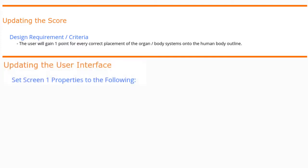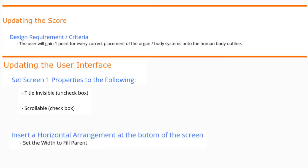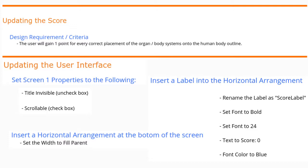In order to do this, we're going to need to first update the user interface by adding a score label to display the accurate score. We're going to set Screen 1 properties so the title is invisible and the app is scrollable. We'll insert a horizontal arrangement at the bottom of the screen, and inside that arrangement we'll use a label called Score Label, which will represent what the global score variable equals.